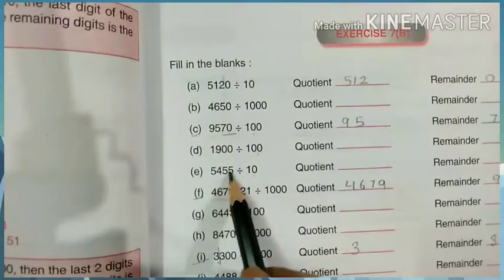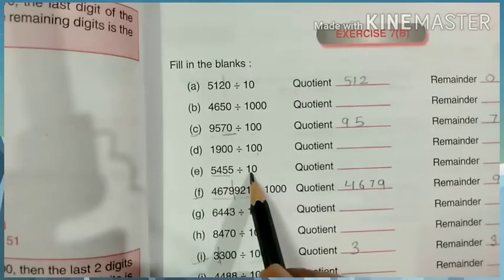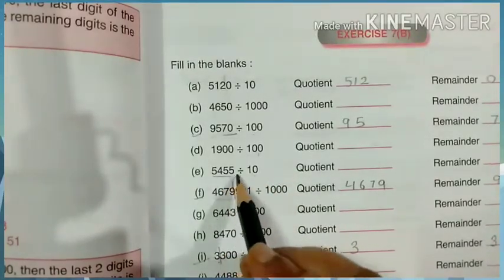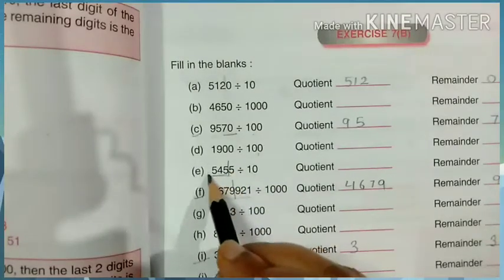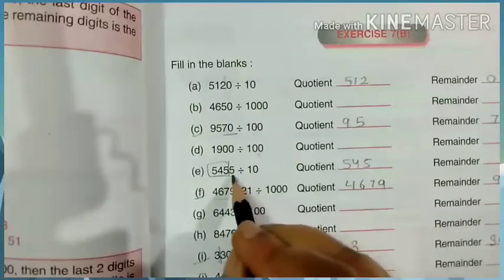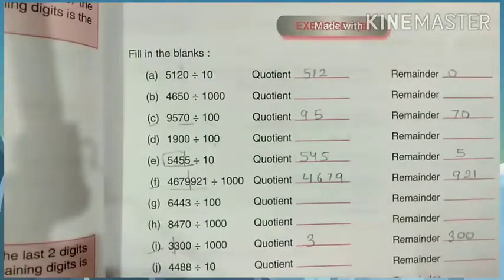So what we will do from right side? How many times are there? One zero. So right side is our way from this side. So what we will do from right side? That will be our reminder. Are you able to understand?